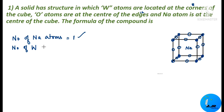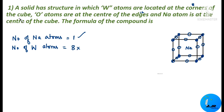Number of tungsten atoms: tungsten is seen at the corners — eight corners, so eight tungsten atoms are present. But atoms at the corners are shared by eight other unit cells. The contribution of each corner atom to this unit cell is 1/8. So for eight corner atoms: 8 × 1/8 = 1. Tungsten contribution = 1.